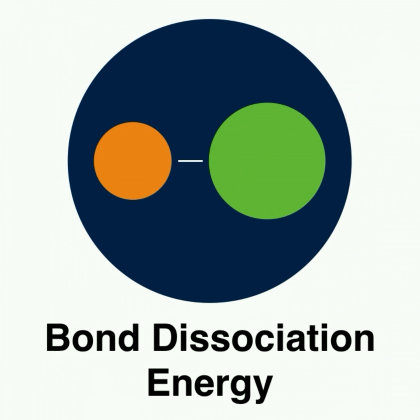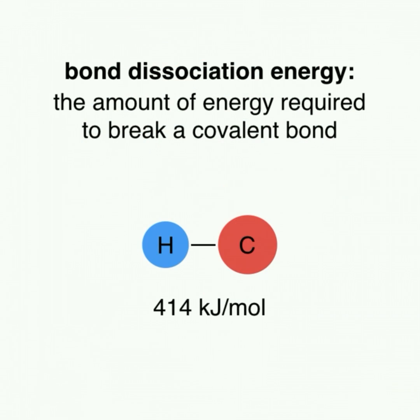In this lesson, we'll discuss the concept of bond dissociation energy and how it's used to determine the strength of covalent bonds. Bond dissociation energy is the amount of energy that's required to break apart a covalent bond.